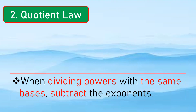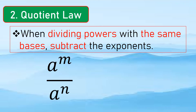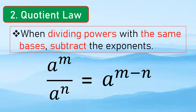So the quotient law. It states that when dividing powers with the same base, subtract the exponents. So if we have a to the m over a to the n, we copy the same base a and subtract m and n, giving us a to the m minus n.